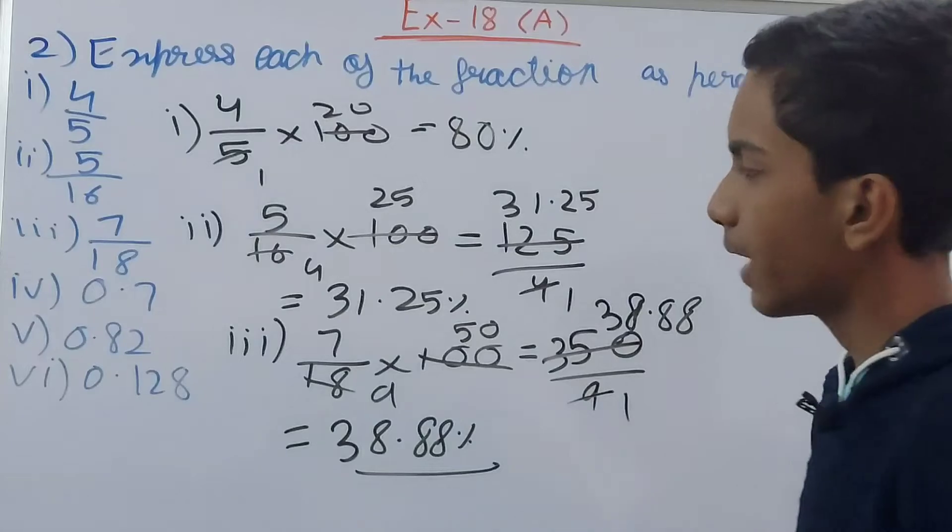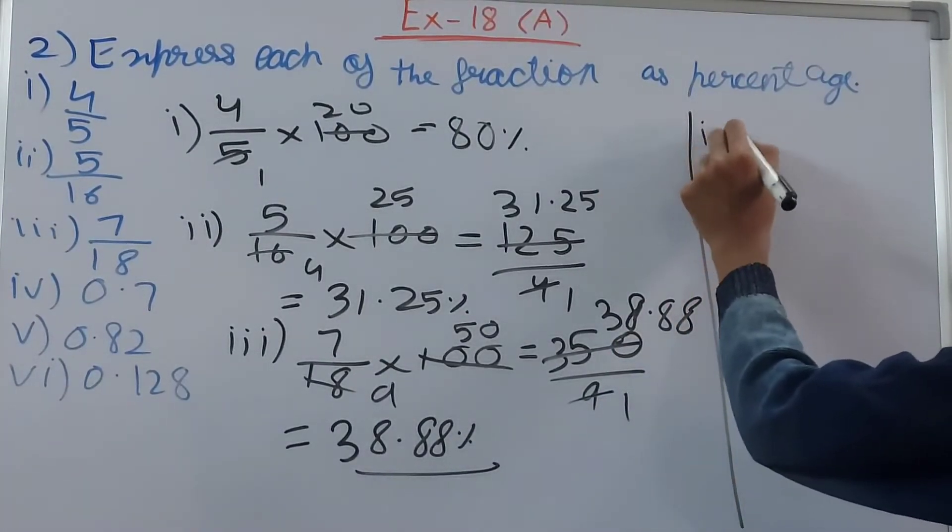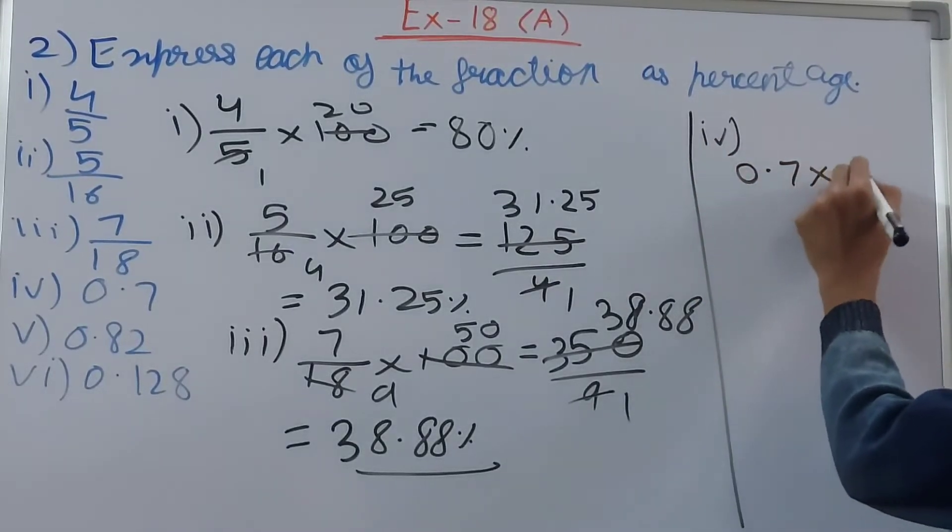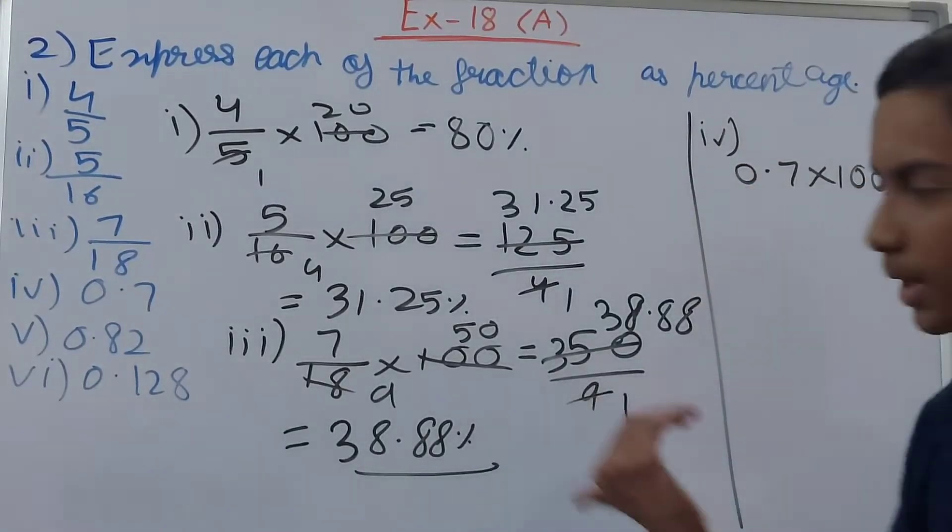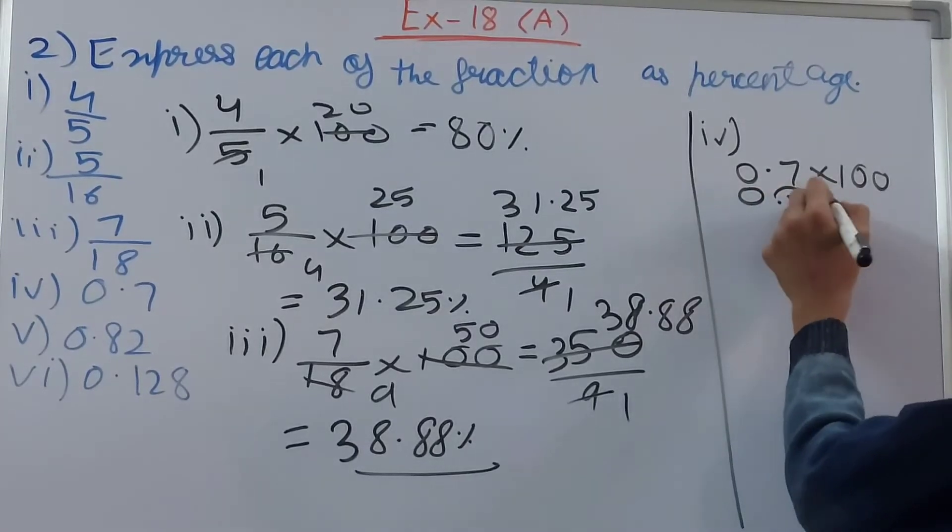You can leave it as a mixed fraction as well. Then fourth one, I'll solve it here. So fourth part, we have 0.7, again multiply by 100. So decimal place will shift two places to the right. This is 0.7, so 1, 2, here it will come, so we get 70 percent.